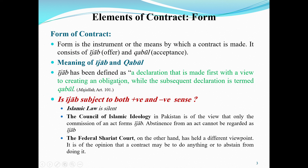Ijab has been defined as a declaration that is made first with a view to creating an obligation, while the subsequent declaration is termed Qabul. So any party who makes a statement of contract first — their statement will be considered the offer (Ijab), and the positive response of the second party will be considered Qabul. For example, a seller says 'I sold you my commodity for 10 rupees' — this is the offer. The buyer says 'Okay, I bought it for this price' — that response is Qabul.